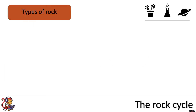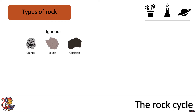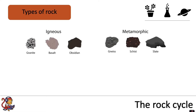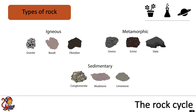In previous videos we've looked at three different types of rock: igneous, metamorphic, and sedimentary. This video is about the rock cycle which links all three types of rock.